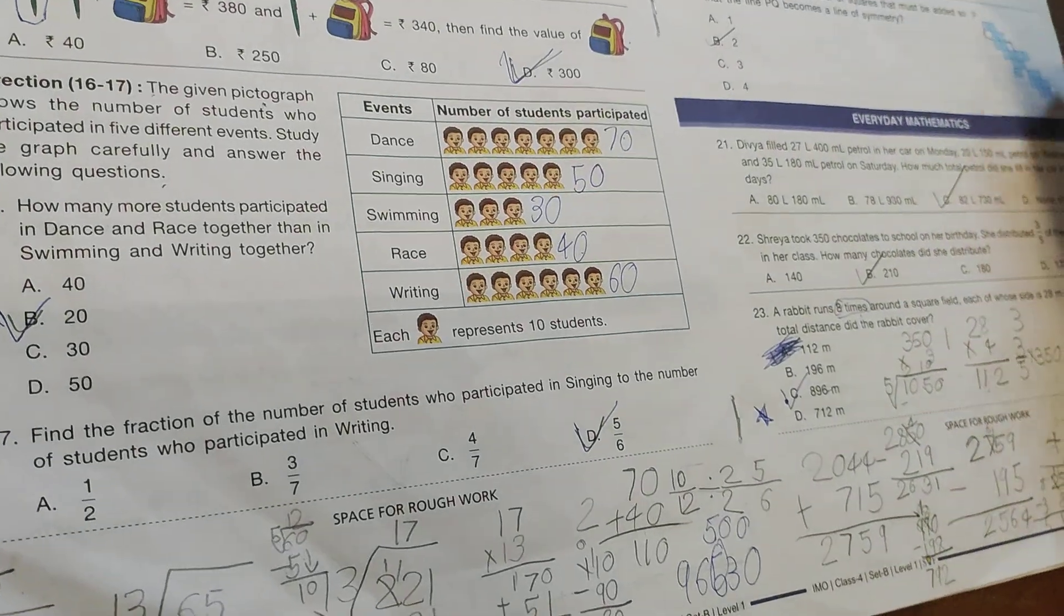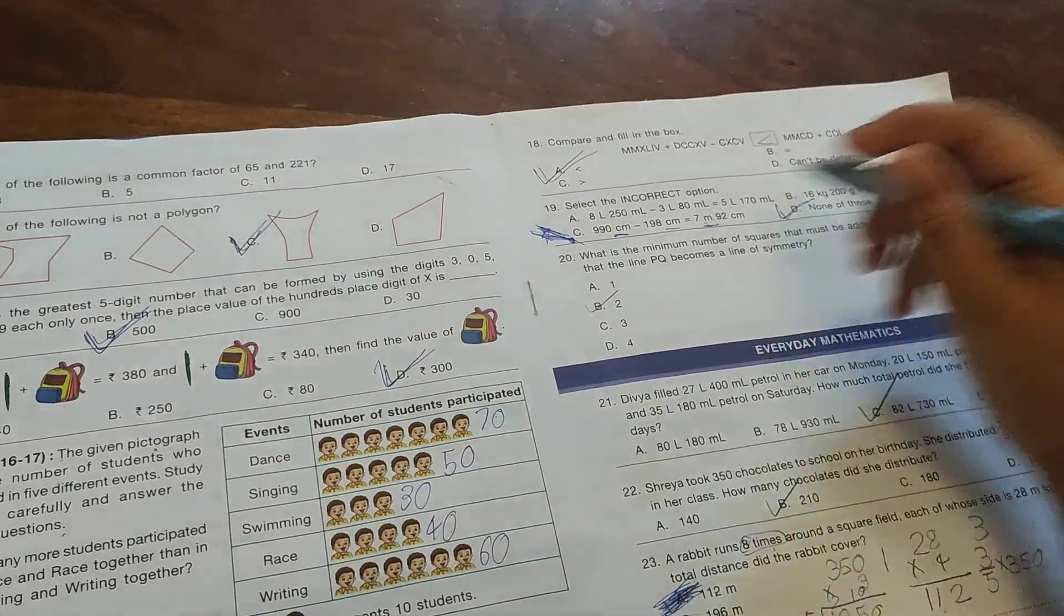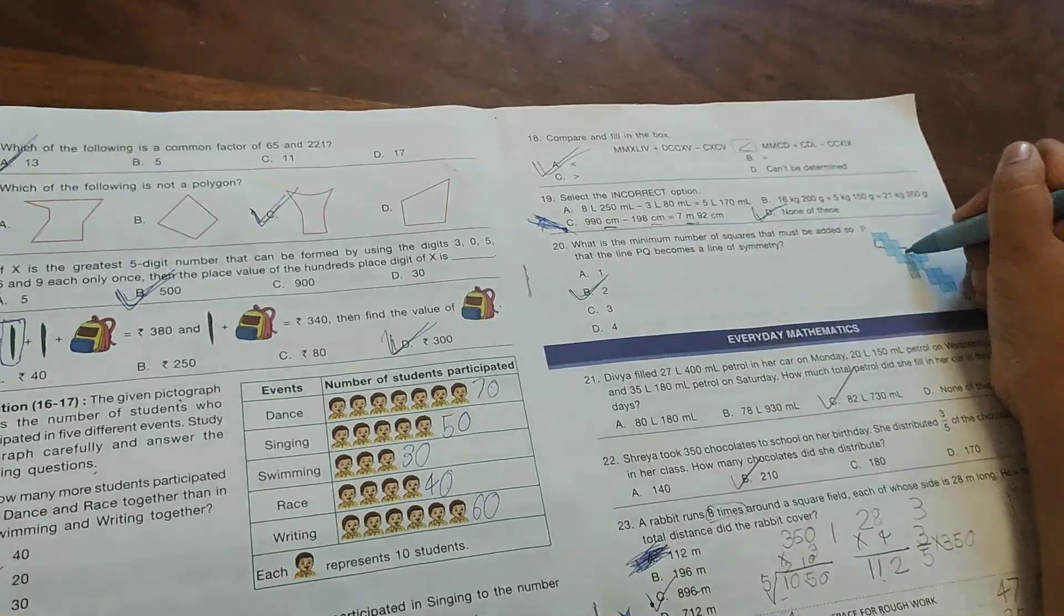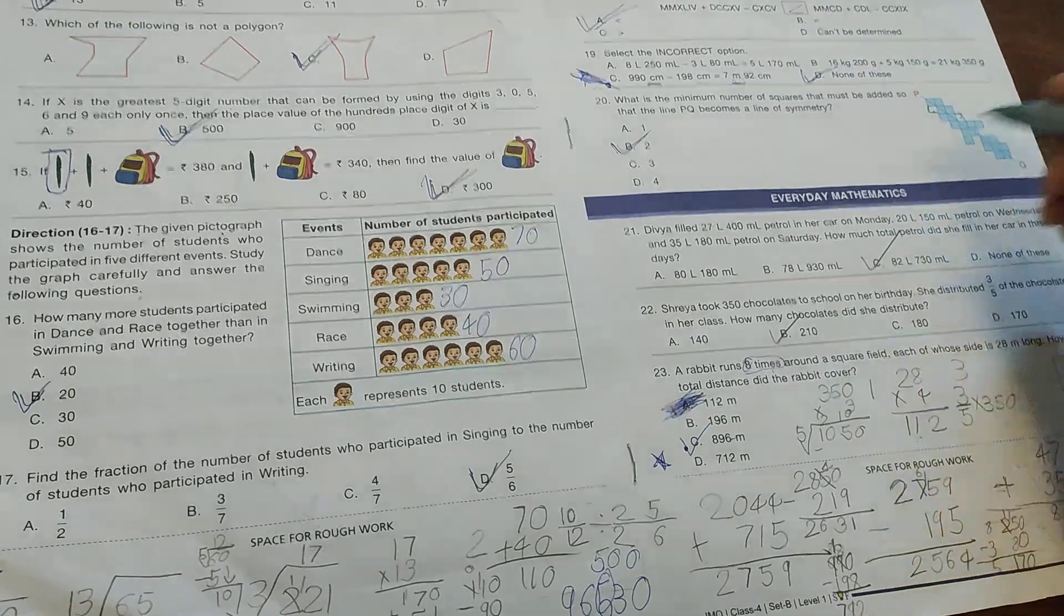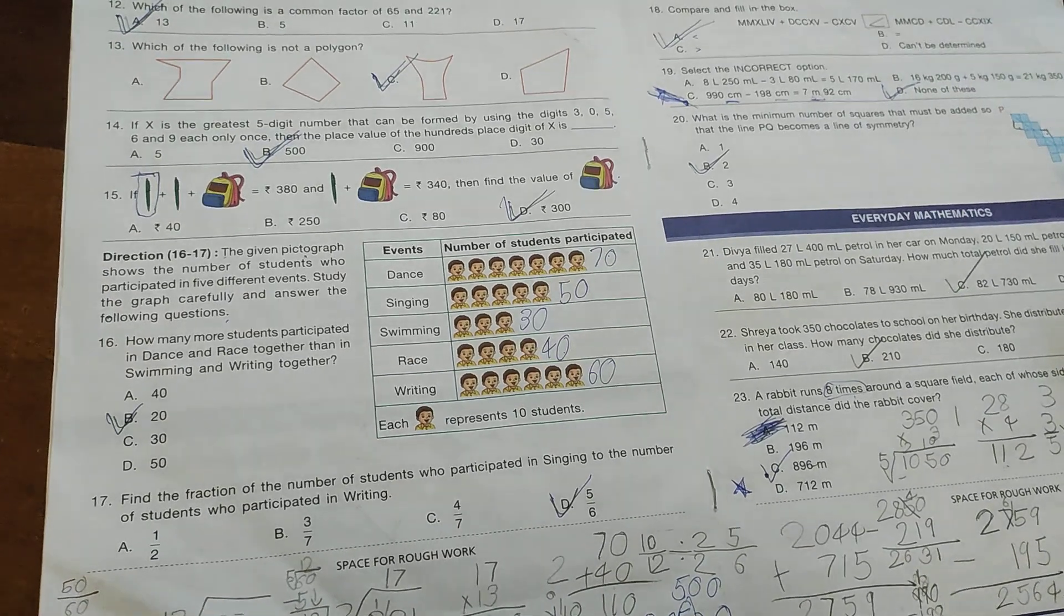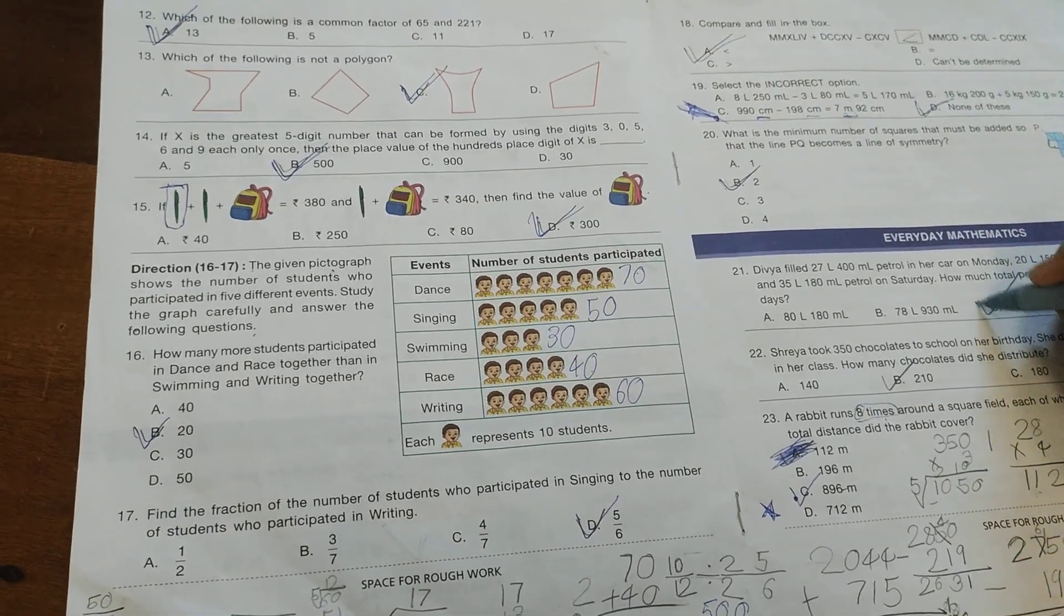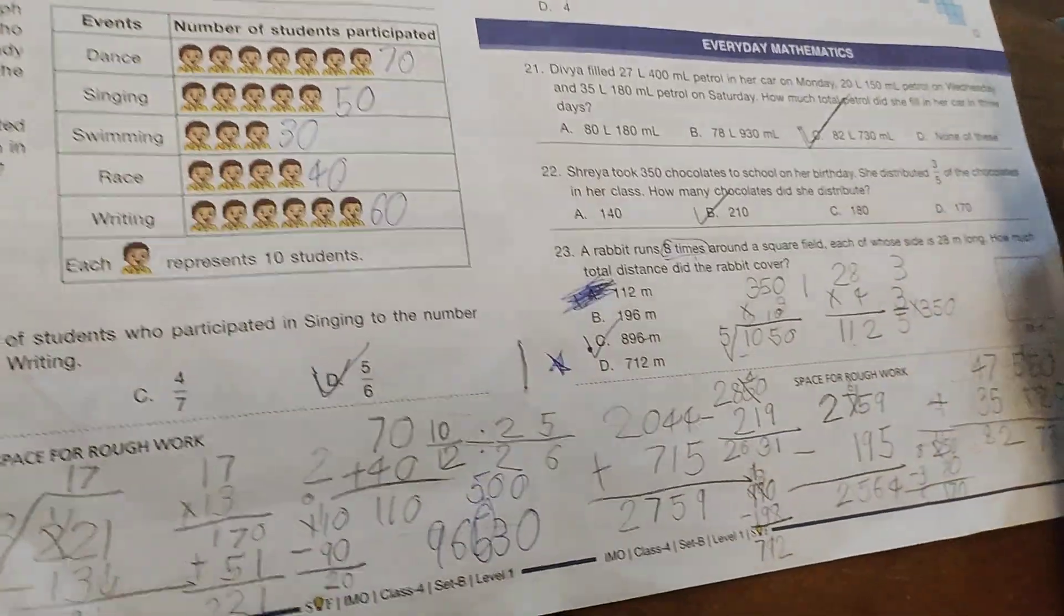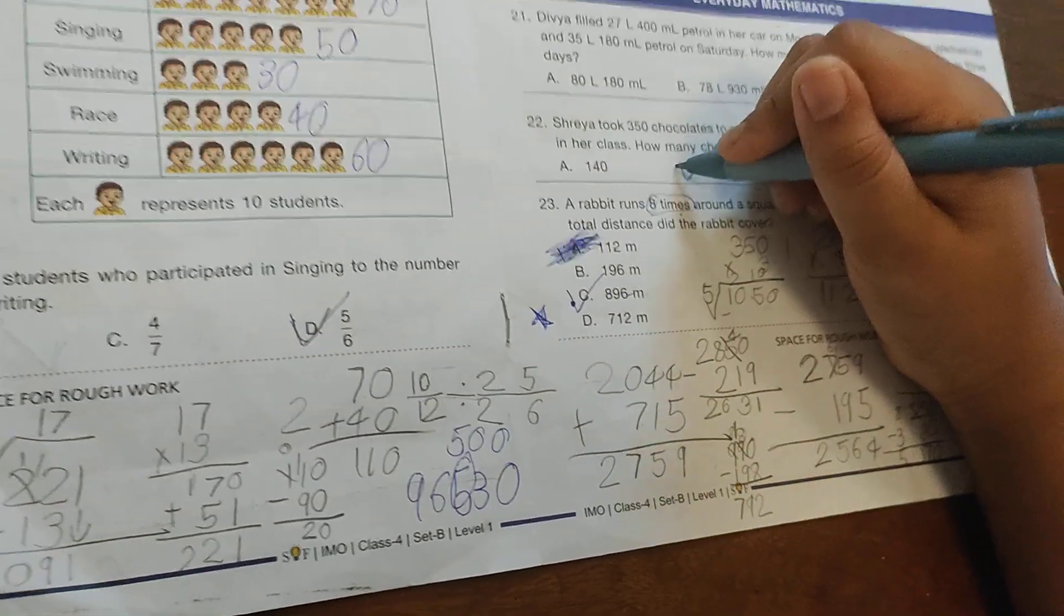What is the minimum number of dots that must be added so that line PQ becomes a line of symmetry? Option is 2. A car was filled with 27 liters 400 ml of petrol, then 20 liters 150 ml, then 35 liters 180 ml. How much total petrol was filled in 3 days? 82 liters 730 ml. Siya took 350 chocolates and distributed 3/5 of them. How many chocolates did she distribute? Option is 210.